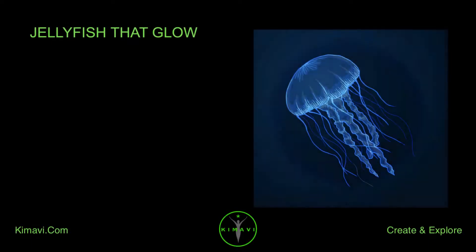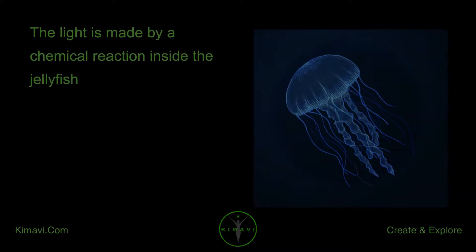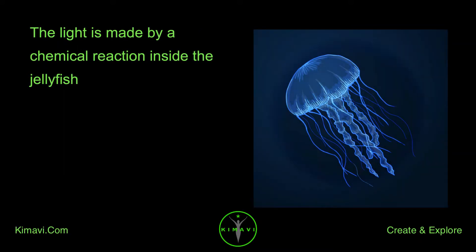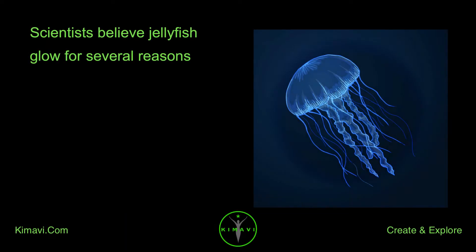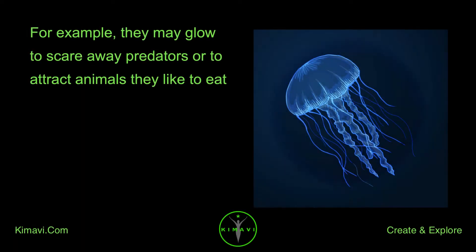Some jellyfish can glow in darkness by making their own light. The light is made by a chemical reaction inside the jellyfish. Scientists believe jellyfish glow for several reasons. For example, they may glow to scare away predators or to attract animals they like to eat.